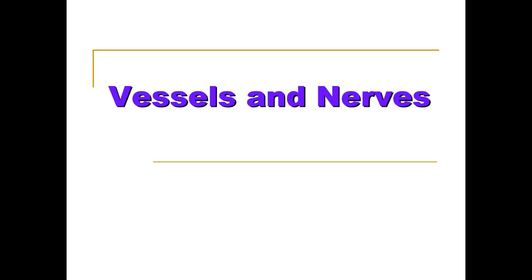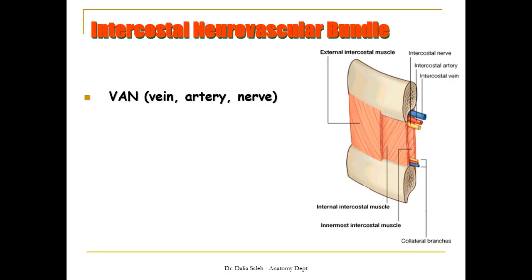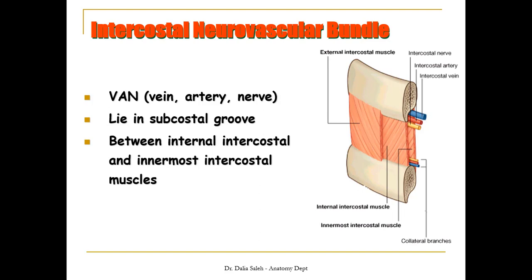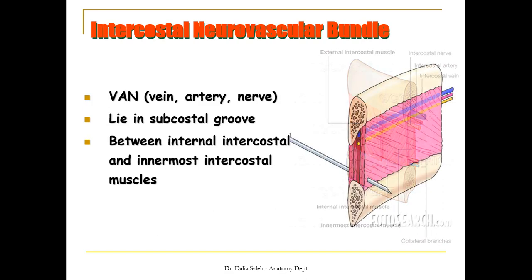What about the vessels and nerves supplying the thoracic wall? The main arrangement of the neurovascular bundle in each space: the intercostal vein is superior, in the middle we have the intercostal artery, and below we have the intercostal nerve. Notice that they lie in the subcostal groove, passing between the internal intercostal and the innermost intercostal muscles, lying close to the rib above. So it is safe to insert a needle in the intercostal space close to the upper border of the rib below, not to the lower border of the rib above.